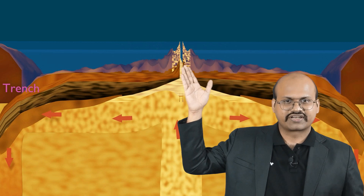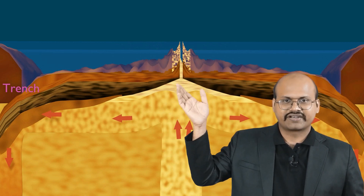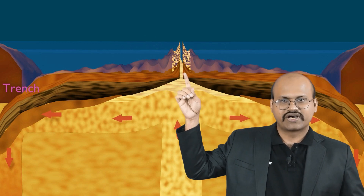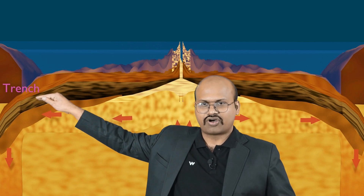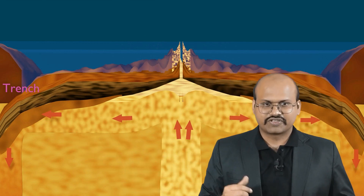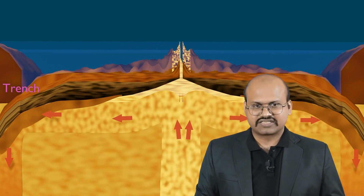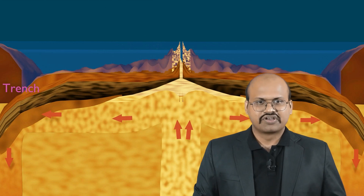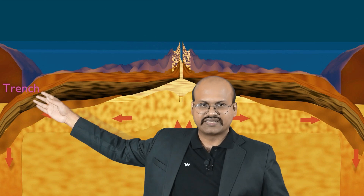Hess explained how the mid-oceanic ridge is formed: magma from the convection current produces new sea floor and as the sea floor moves like a conveyor belt, it reaches the edges and then subducts into the asthenosphere. This was the whole mechanism given by Harry Hess for how the sea floor is formed continuously at the mid-oceanic ridge and is destroyed under trenches.